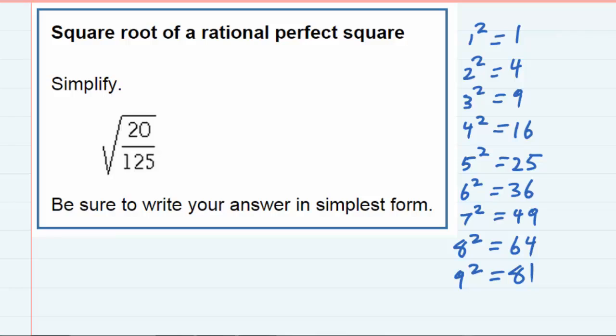Now to simplify, we can take out perfect squares from the radical. However, this expression doesn't appear to have any perfect squares. 20 is not a perfect square, neither is 125,